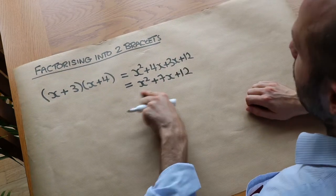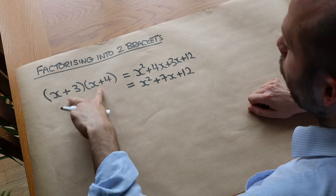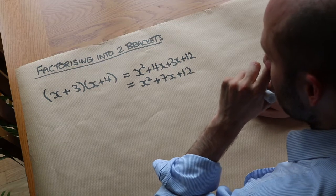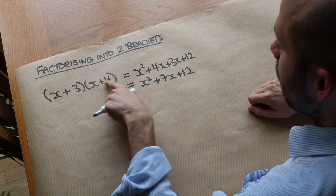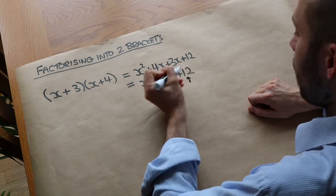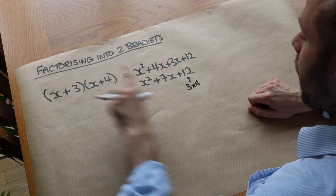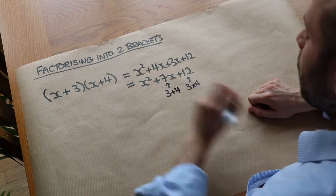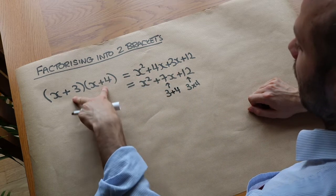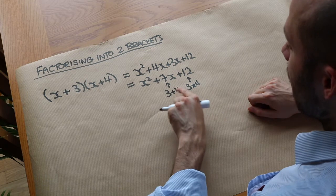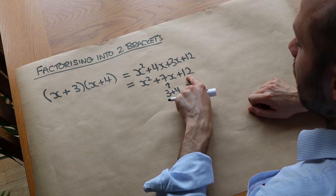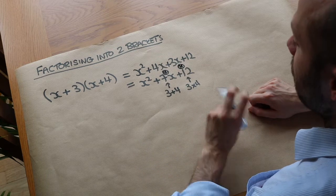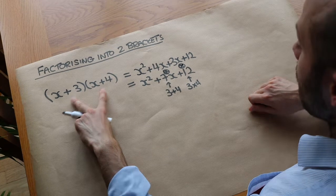Now suppose someone had just given us this expression and asked us to work out what the original two brackets were — that's known as factorising. We saw that 12 was obtained by doing 3 times 4, and the 7 was obtained because we had 3 plus 4. So to factorise, we need to find two numbers which add to give 7 and multiply to give 12.